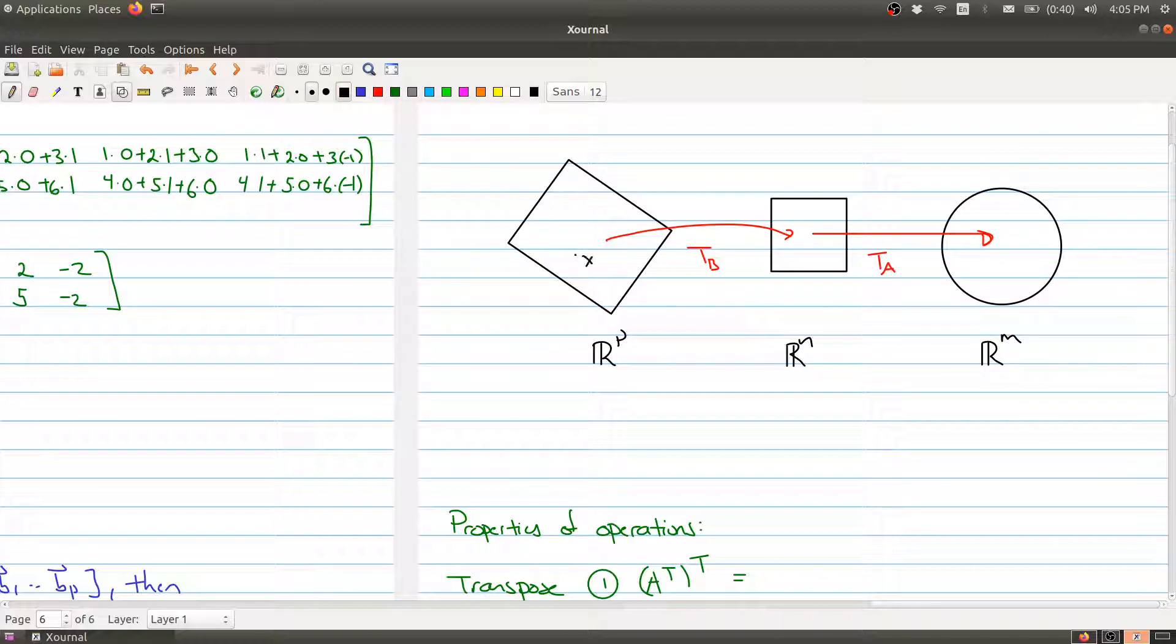And notice that a vector X is mapped over to T_B, X, which is then mapped over to T_A, T_B, X. And what we're doing when we're multiplying matrices together is we're defining a new function T_AB, X, which works by first multiplying X by B and then multiplying by A.